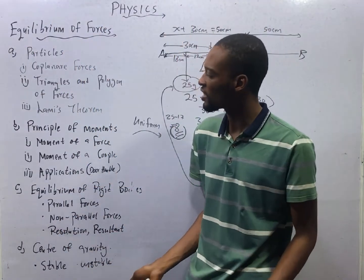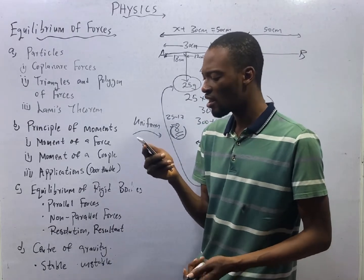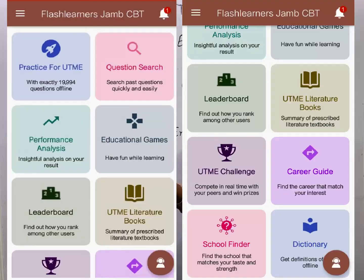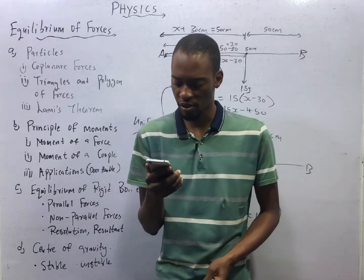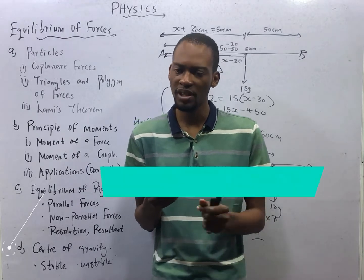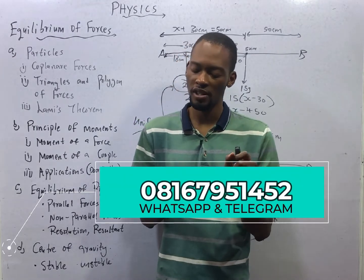Equilibrium of forces. This brings us to the end of this class. What do you do? Get the Flash JAMB application. If you have not gotten it, visit flashlearners.com. You will see a lot of install options. Then go to Practice for UTME. As the app opens, click on Physics.